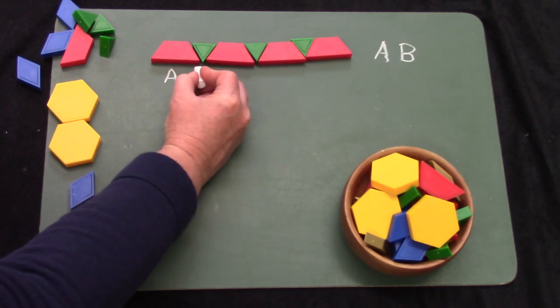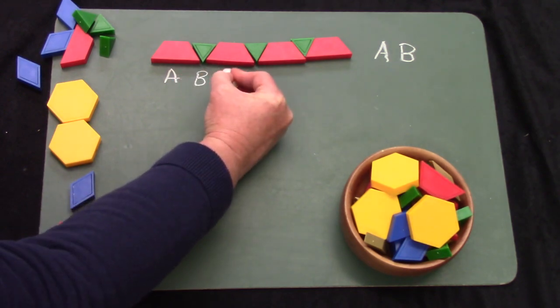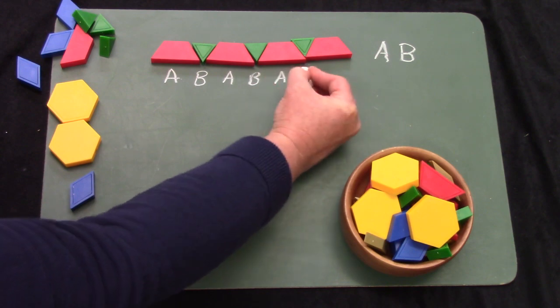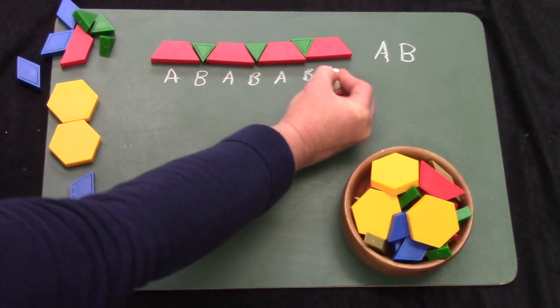The trapezoid is an A, triangle's the B. A, B, A, B, A, B, A.